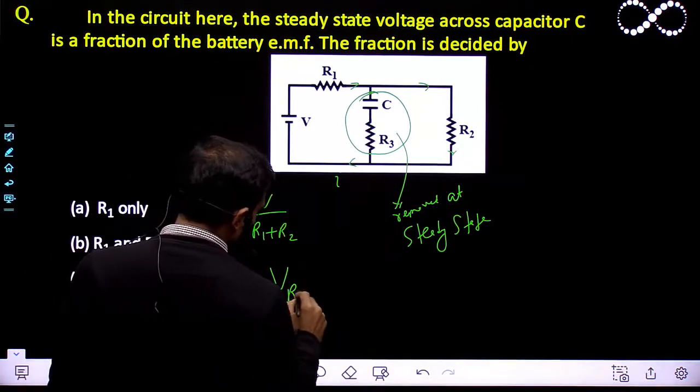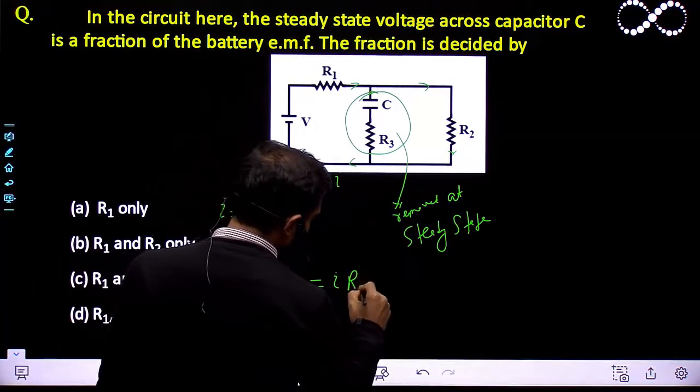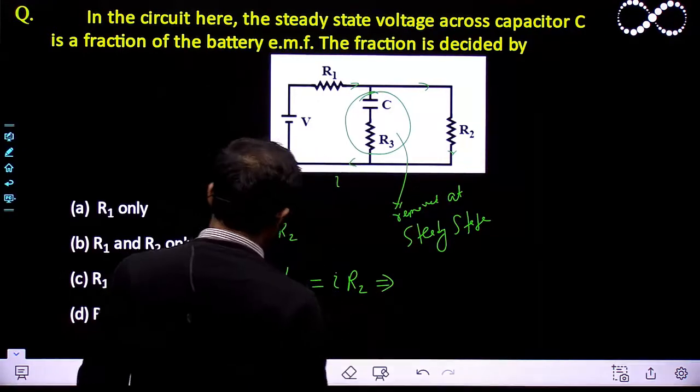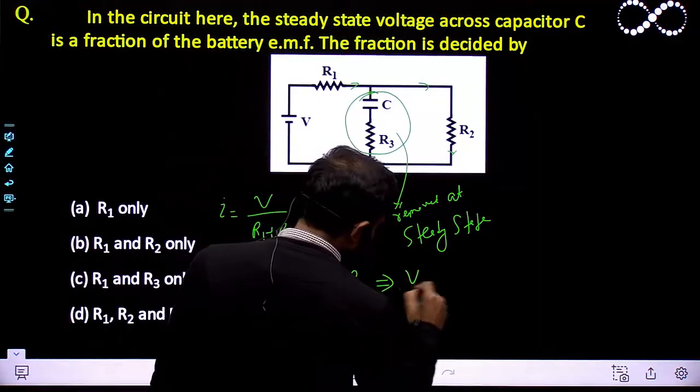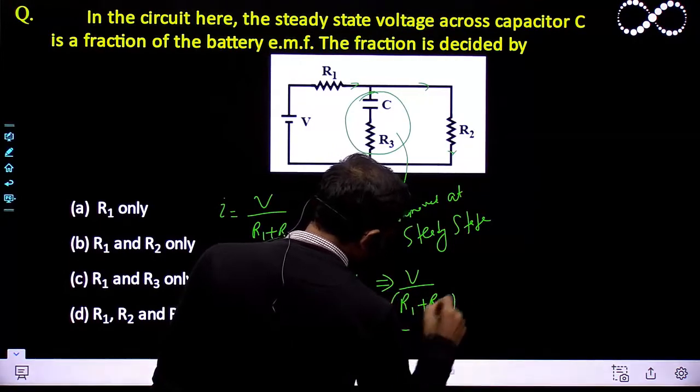Potential drop across R2 will be equal to I×R2. The value of I is given here: V/(R1+R2) into R2.